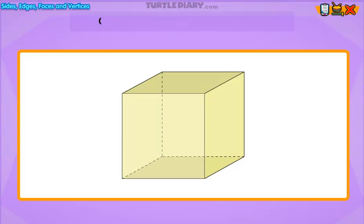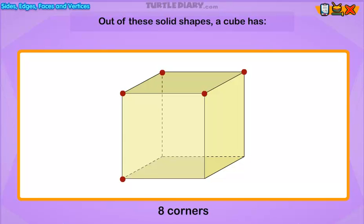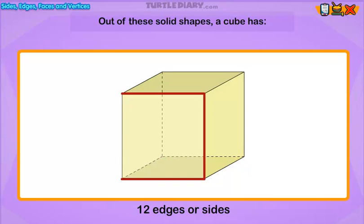Out of these solid shapes, a cube has six faces, eight corners, and twelve edges or sides.